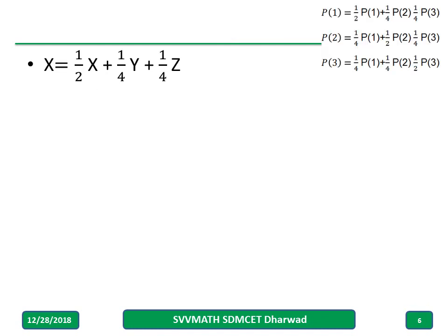Now, simply I am writing the same equation, probability of 1 as x, and 2 as y, and 3 as z.